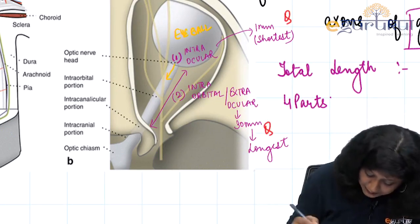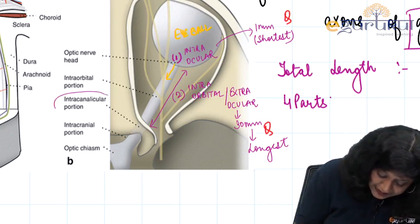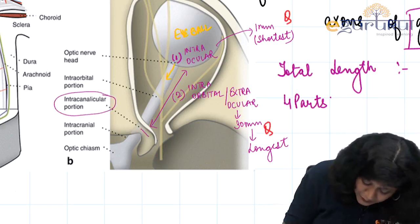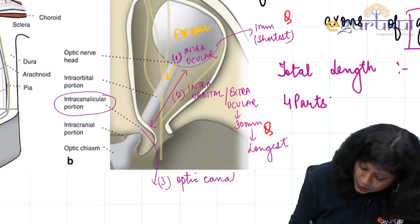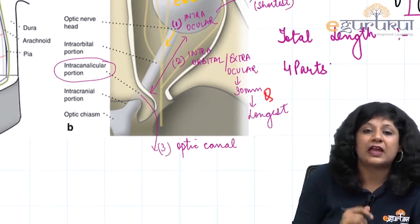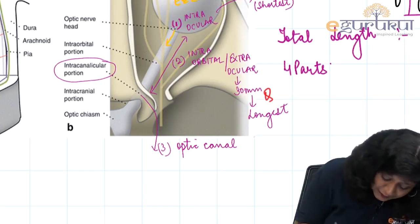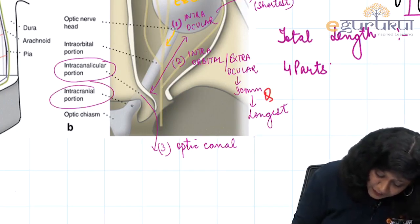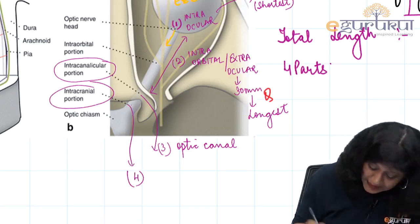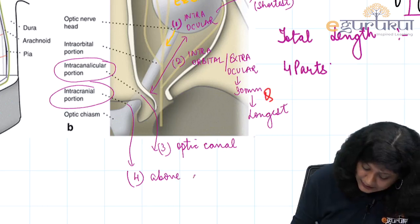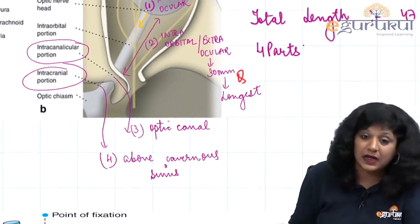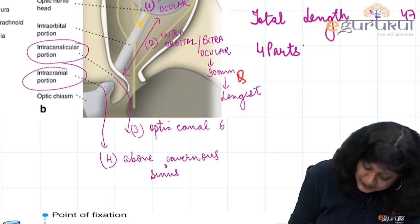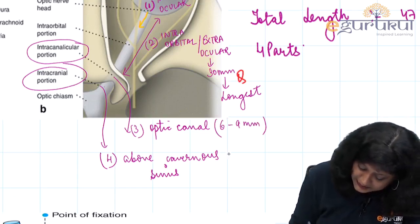The third part lies inside the optic canal — the optic nerve lies in the optic canal along with the ophthalmic artery. The fourth part lies in the brain, above the cavernous sinus. The lengths are 6 to 9 mm and 10 mm respectively.